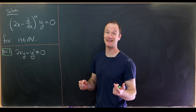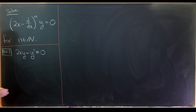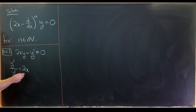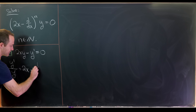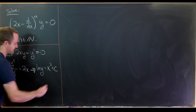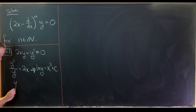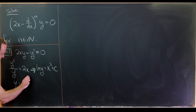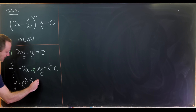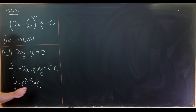This is a separable differential equation, so we can perform separation of variables. We can write y prime over y equals 2x, then take the antiderivative of both sides to get the natural log of y equals x squared plus a constant. Exponentiating both sides gives y equals e to the x squared plus a constant, which is the same as a constant times e to the x squared.